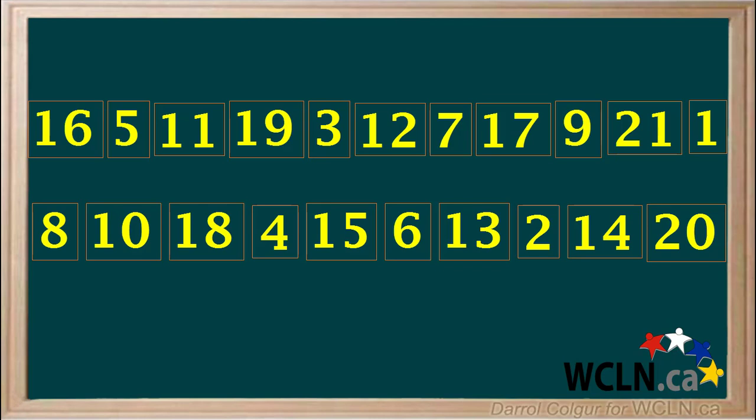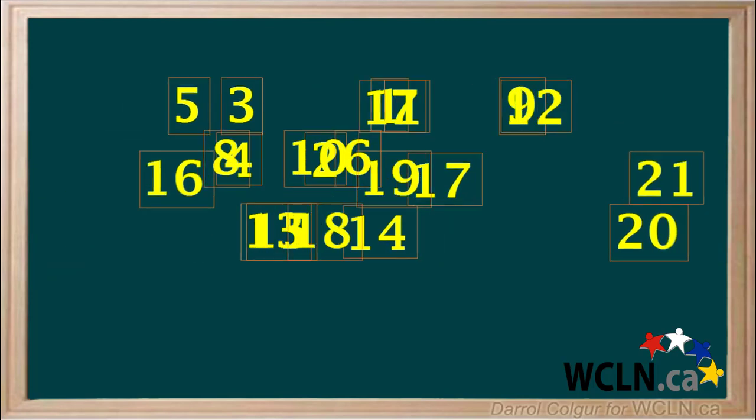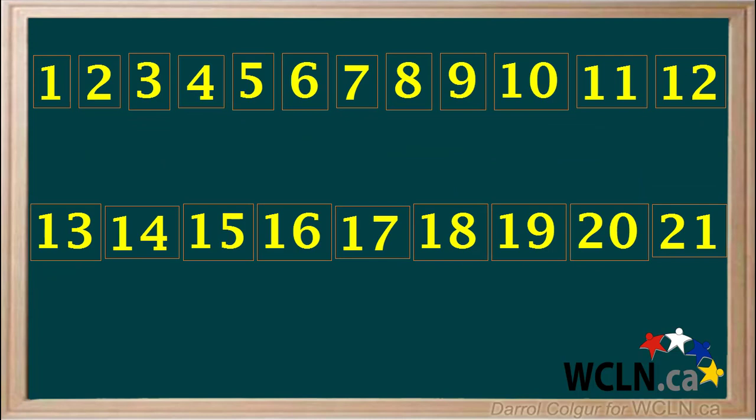We can also look for patterns when shown a set of numbers. Looking at these numbers, can you see an obvious pattern? Probably not. There is no real pattern here. But if we rearrange the order, we can certainly recognize this pattern. It is the numbers 1 to 21, in order from smallest to largest.